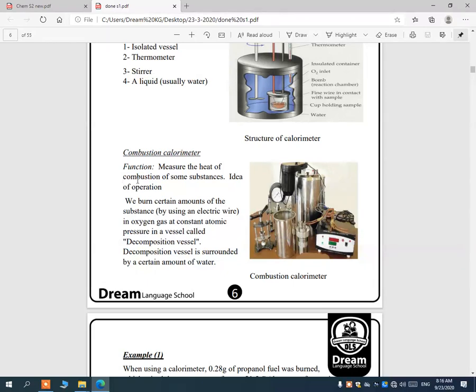For example, the function is to measure the heat of combustion of some substances and its idea of operation. We burn a certain amount of a substance by using an electric wire in oxygen gas at constant atmospheric pressure in a vessel called decomposition vessel or ignition container.